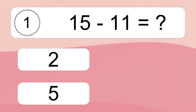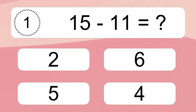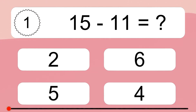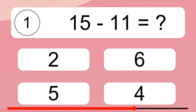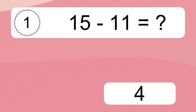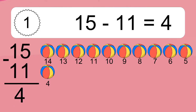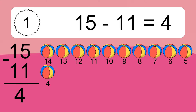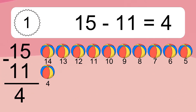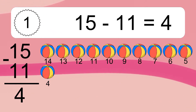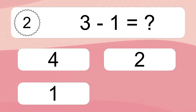15 minus 11 equals what? 15 minus 11 equals 4. Let's count it. 14, 13, 12, 11, 10, 9, 8, 7, 6, 5, 4.